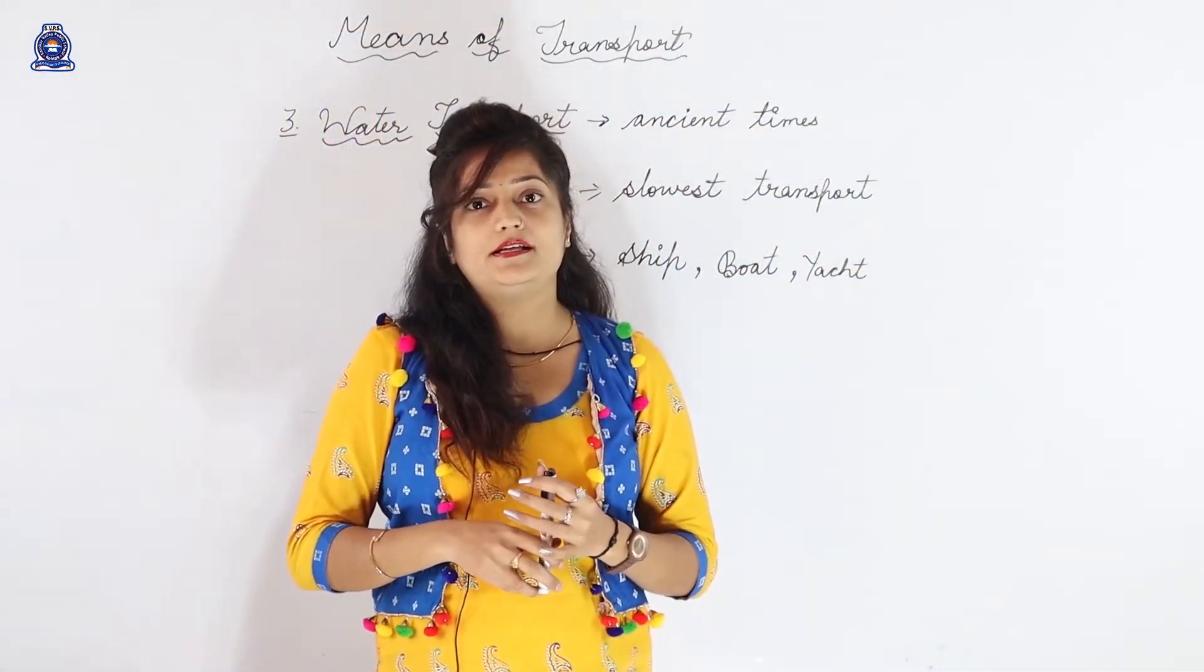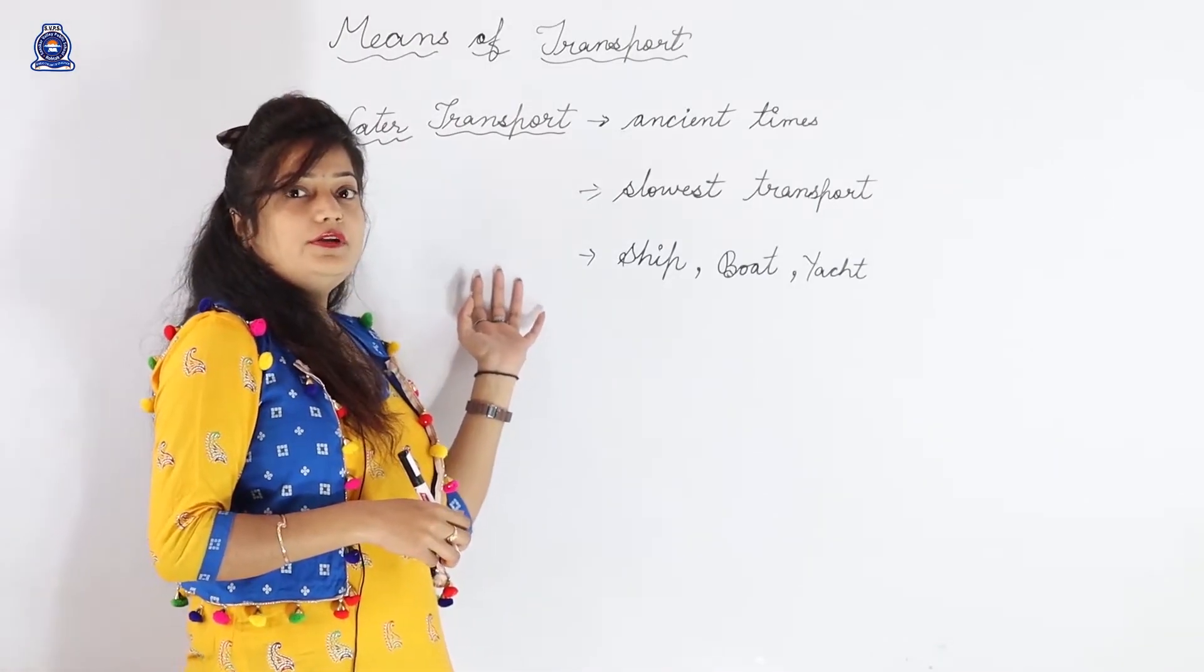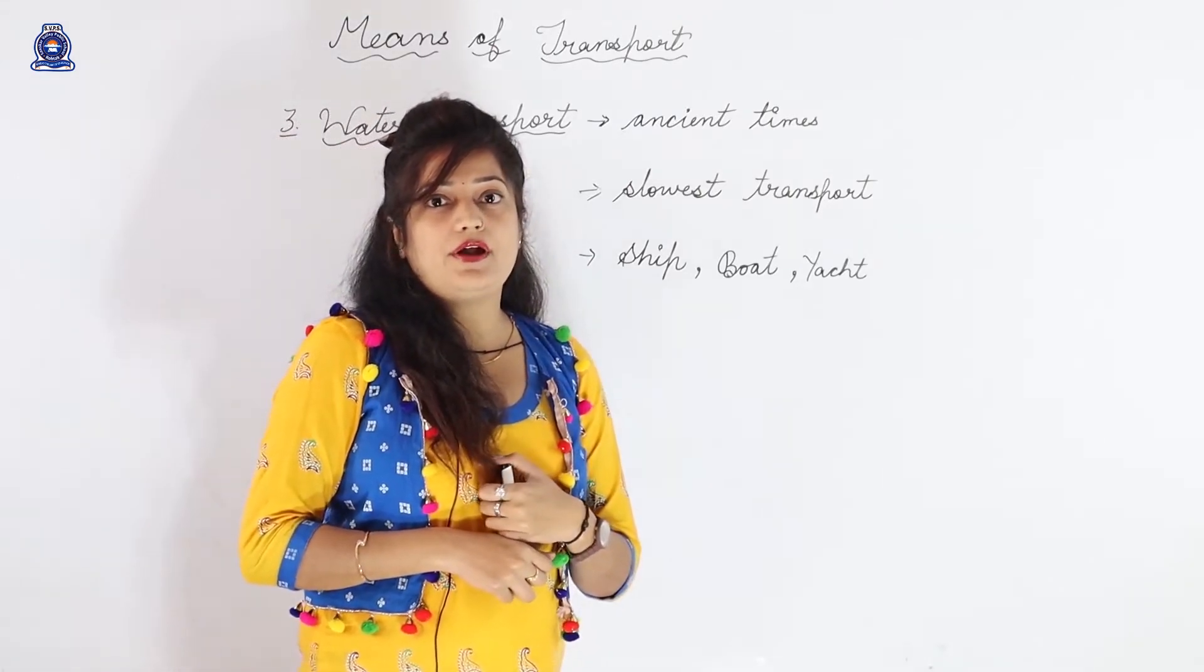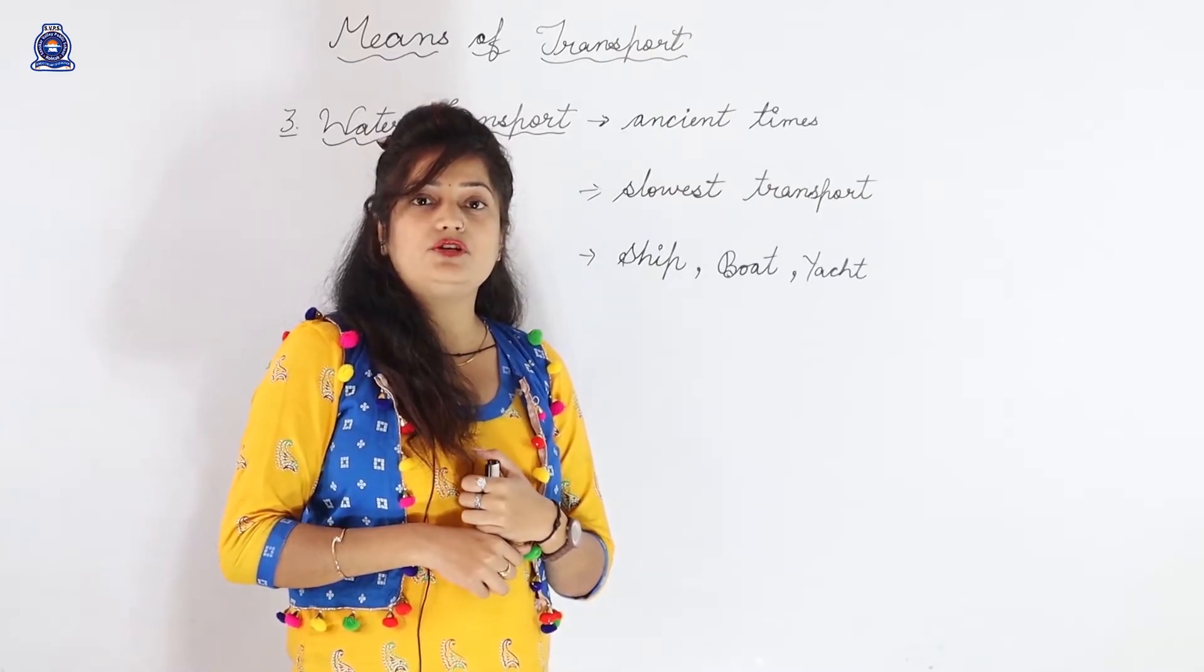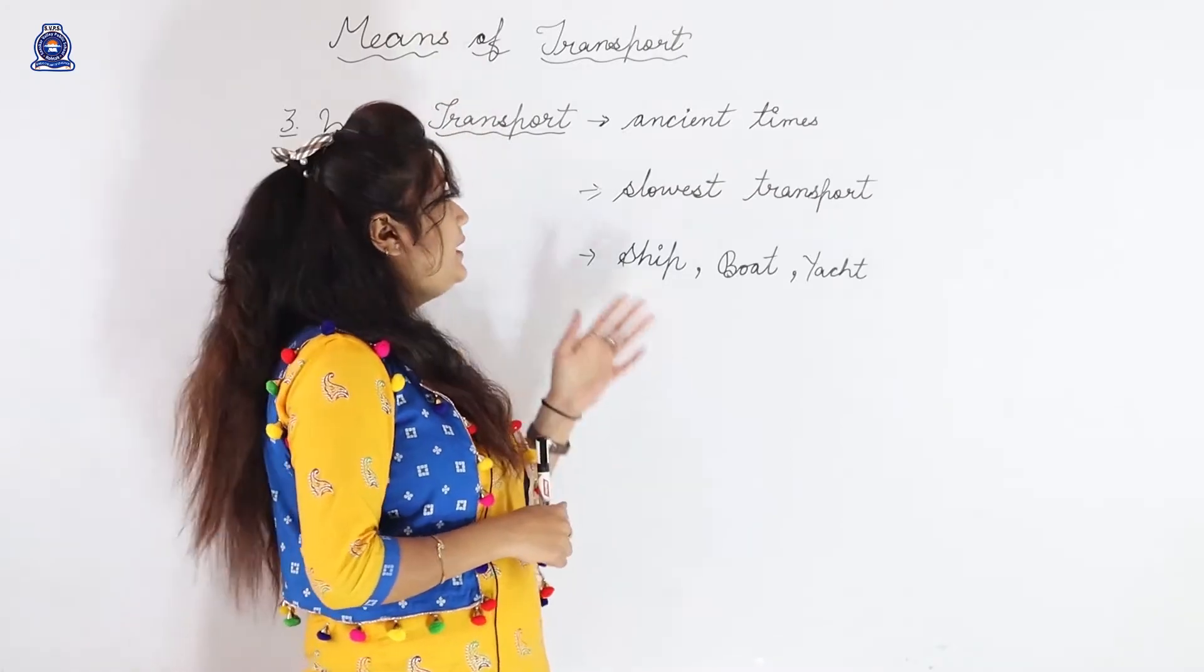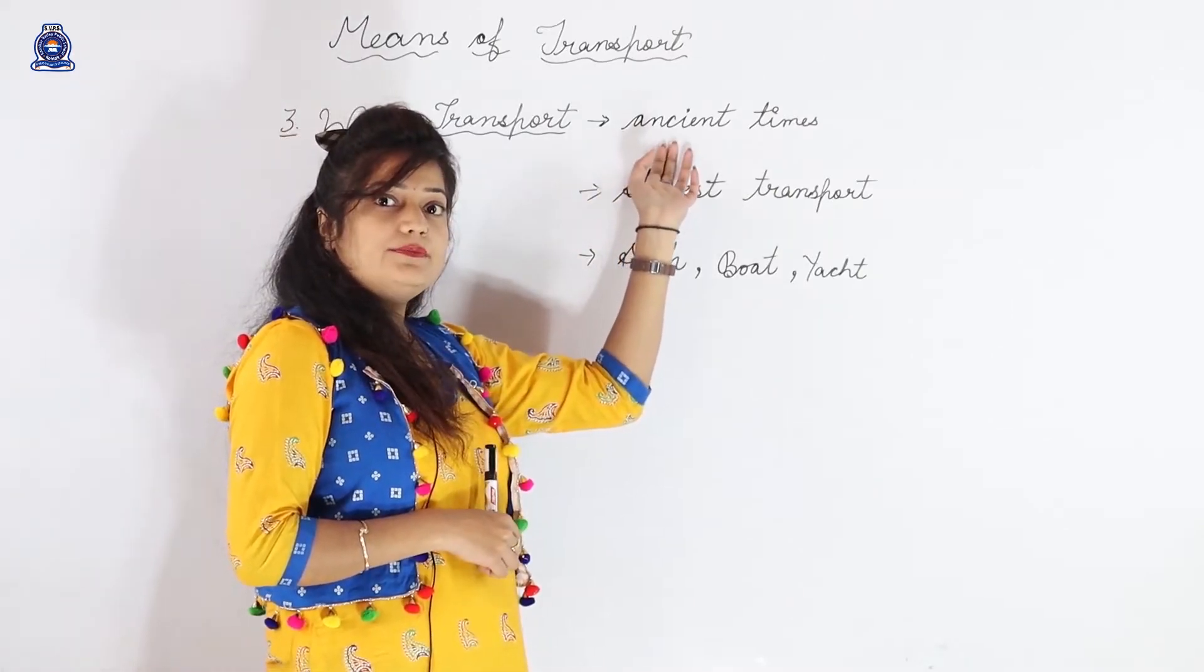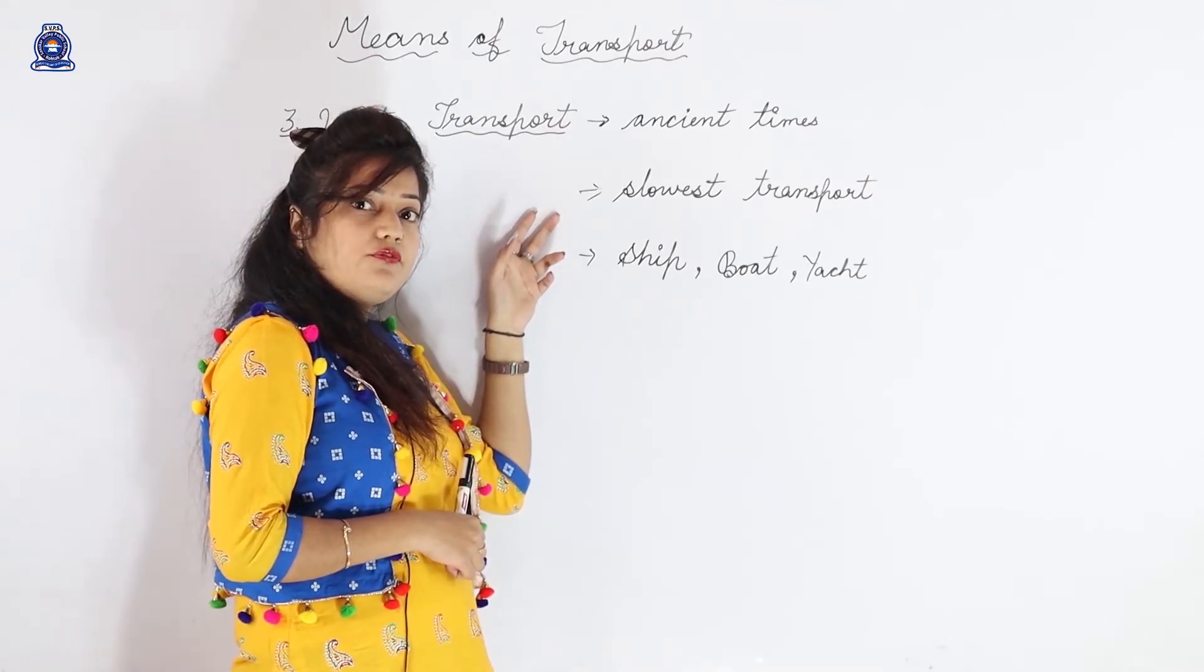Now students, the third means of transport is water transport. We can travel on water without getting wet. How? By using water transport. Water transport is used since ancient time and it is the slowest means of transport.